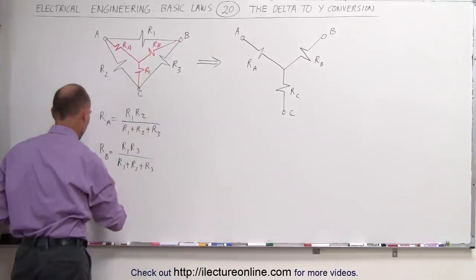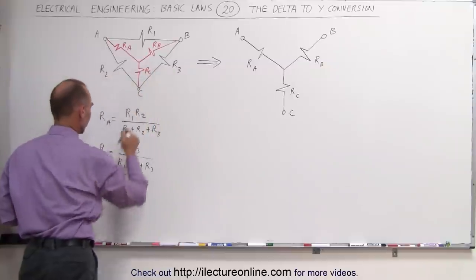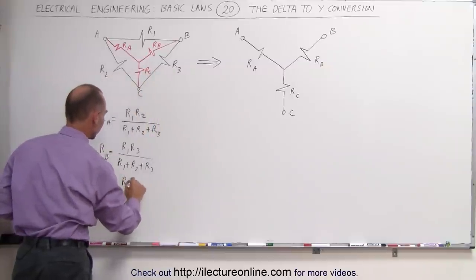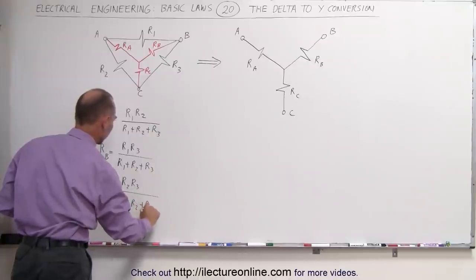And finally, to find RC. Again, notice that RC is between R2 and R3, so this becomes the product of R2 and R3 divided by the sum of R1 plus R2 plus R3.